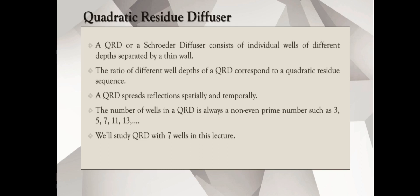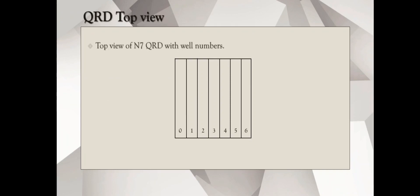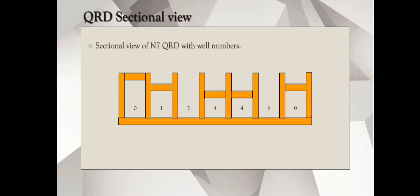In this video, we'll focus on QRD with 7 wells. It's also known as a N7 QRD or N7 diffuser. This is a top view of the N7 QRD with the well numbers mentioned. The well number starts from 0 and goes all the way up to 6, and there are 7 wells in total, as the name suggests N7 QRD. This is a sectional view in the same orientation, the well number starts from 0 and goes all the way up to 6.